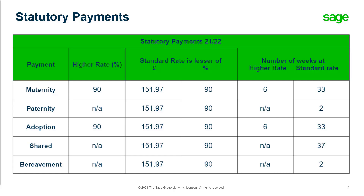Statutory payments have had various rate changes but the main rules around processing are remaining the same. KIT days or Keep In Touch days are 10 days during the leave, and split days are also 10 days during the leave. The SER reclaim, or Small Employers Relief, remains at an additional 3%.